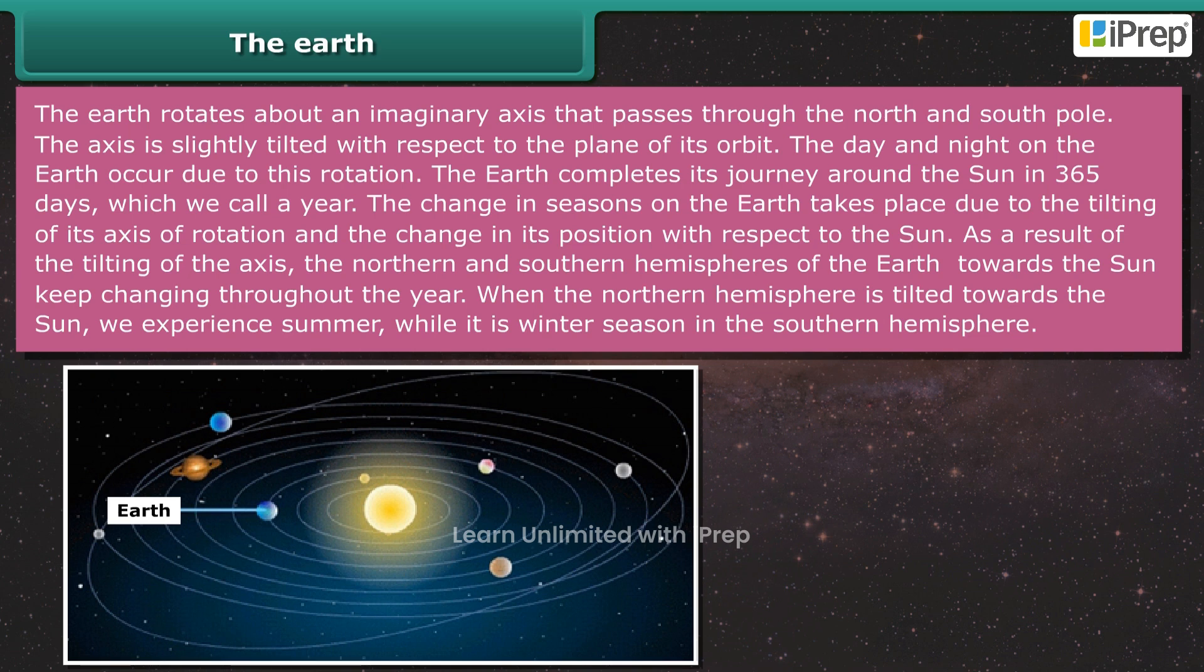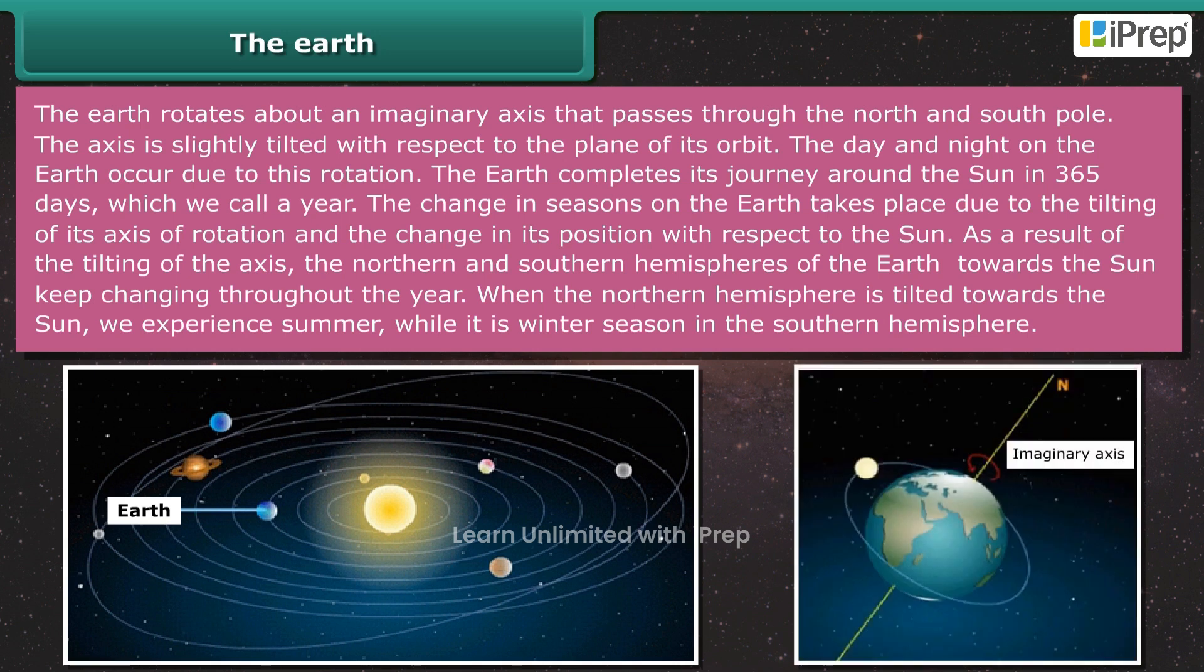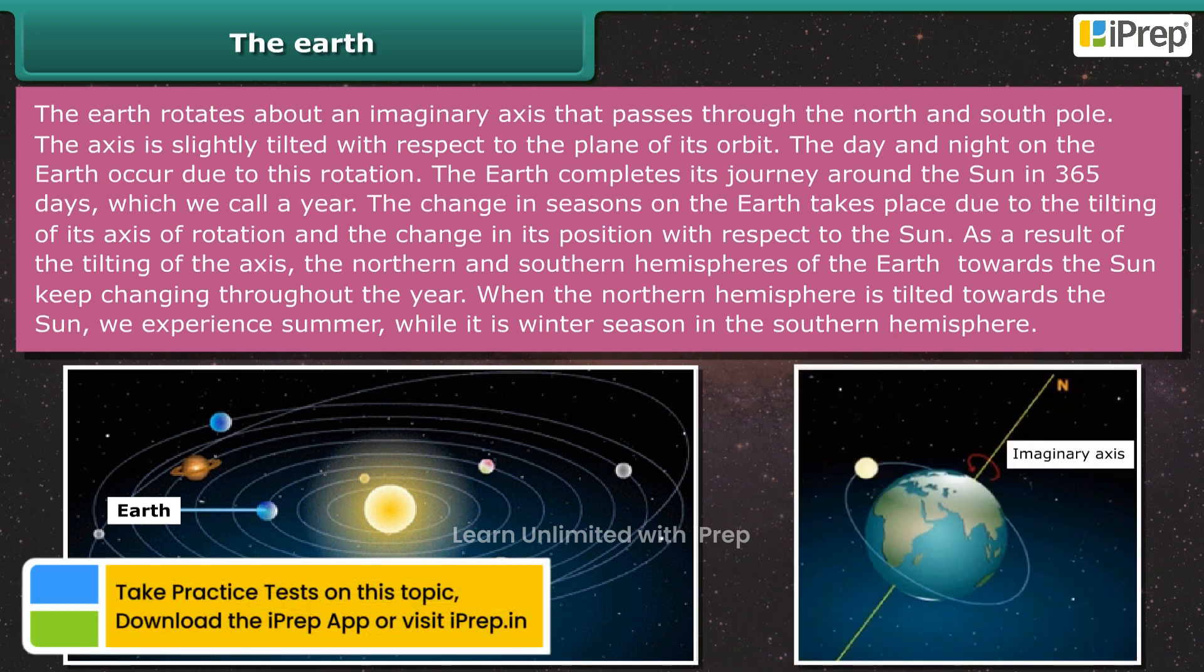The Earth completes its journey around the Sun in 365 days, which we call a year. The change in seasons on the Earth takes place due to the tilting of its axis of rotation and the change in its position with respect to the Sun.